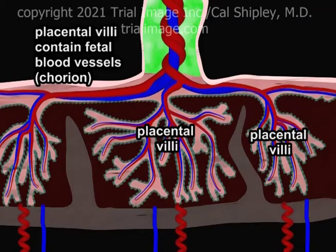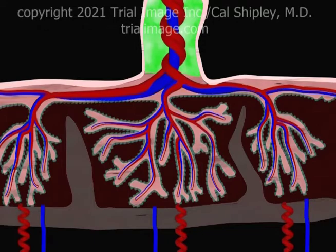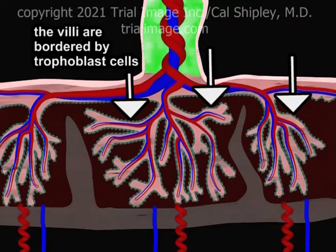Branching structures known as the placental villi contain the fetal blood vessels. The area of the placenta which contains the villi is known as the chorion. The terms placental villi and chorionic villi are interchangeable. The outer borders of the villi are lined by trophoblast cells.